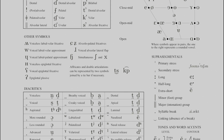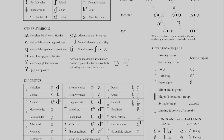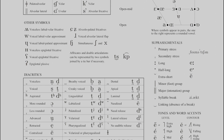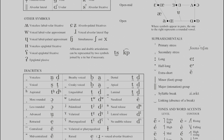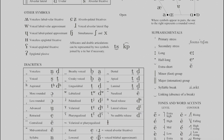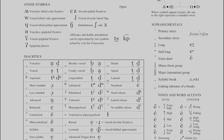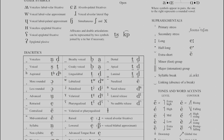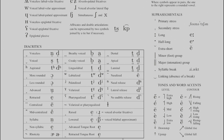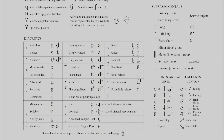Basically, the IPA treats voicing as sufficiently distinct between sounds that it indicates voicing with separate characters, while aspiration is indicated with a diacritic. Most European and Semitic languages use voicing to distinguish between sounds, but many languages do not, and the IPA was designed with the former in mind. The last thing to go over before we dive into the pulmonic consonant chart is the vocabulary you'll need to understand it.